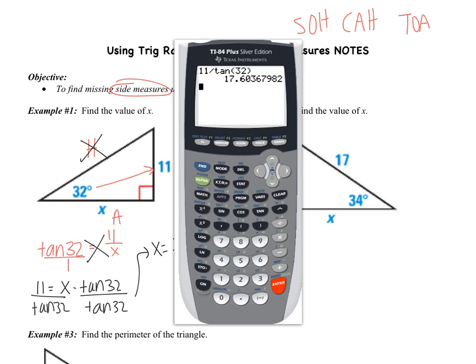So I get x equals 11 divided by the tangent of 32, and then we go to the calculator. Please make sure that you have your calculator. If you need to pause the video, please do that. What I want you to do first is hit mode, and then go down to the third option. You need to make sure that you have degree selected. So hit enter over degree, and then you're going to hit second quit. Now we can do 11 divided by the tangent of 32.